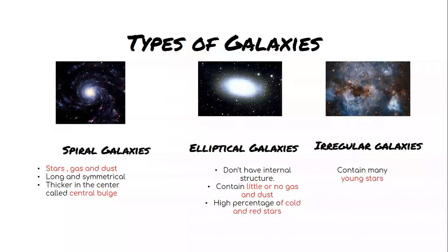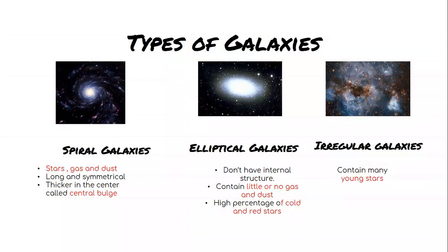This spiral galaxy consists of stars, gases, and dust. They are long and symmetric, thick in the center, and this thickness is called central bulge.